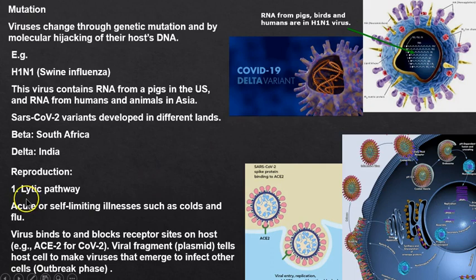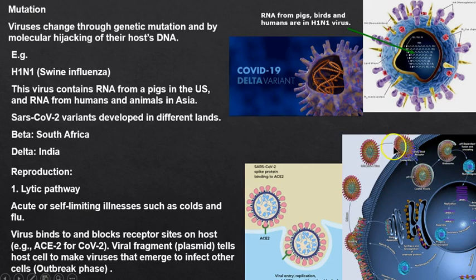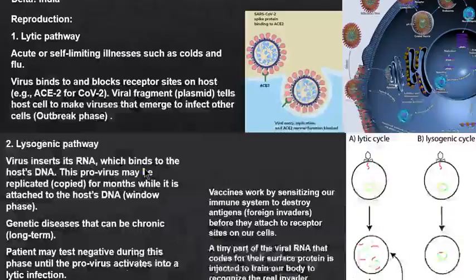Now, how viruses reproduce — there are two ways. The first is lytic. It may feel terrible, but generally we recover. The virus binds and latches onto our ACE2, tying that up and weakening us. Then it tricks our body into making more viruses — some of that food energy goes toward making viruses. We get sick, we sneeze, and we spread it. That's the outbreak.